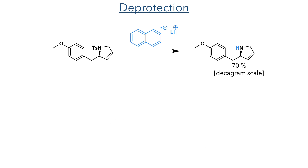With this ring now formed, they could then deprotect the tosyl group. On the large scale, this was done in a 70% yield using lithium naphthalide. This reagent acts as a one-electron reductant and must be freshly prepared by sonicating lithium metal in a naphthalene solution. It is a very reactive reagent, and the reaction must be kept cold at all times, and care must be taken to quench the excess reagent very slowly.